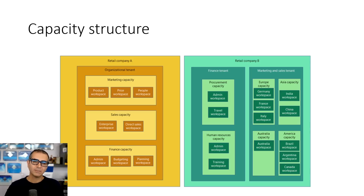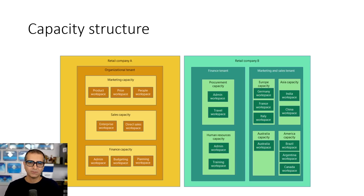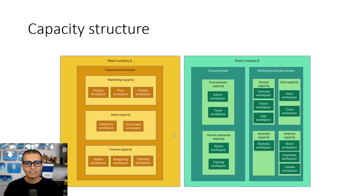Under each capacity you can have multiple workspaces. A workspace is like a sharing unit — this is where you have your Microsoft Fabric objects. These objects can be lakehouse, warehouse, data pipeline, data flow, even Power BI objects, datasets, and reports. You can have these in different workspaces, the same way that you work with capacities in Microsoft Power BI.